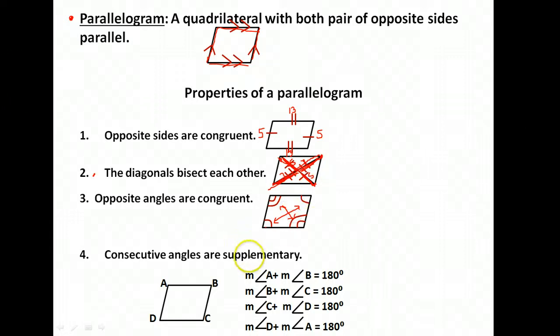And our final one is that consecutive angles are supplementary. Consecutive means as you're going around the parallelogram, the ones next to each other. So A comes right before B. Those are consecutive. So this is consecutive. Opposite is when you have to go across the figure to get to each other. Opposite angles are congruent. Consecutive are supplementary, which remember means they add to equal 180 degrees.